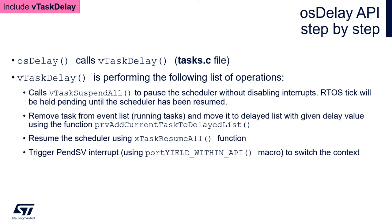Then it removes the task which is calling this function from the run list and moves it to the delayed state by sending the task to the delayed list with the given delay value. This is done using the function prvAddCurrentTaskToDelayedList. After this operation, which sends the task from run to blocked state, the scheduler resumes its operations via xTaskResumeAll.